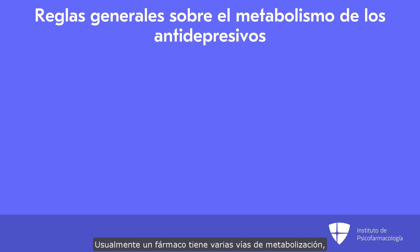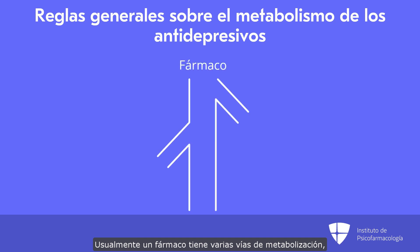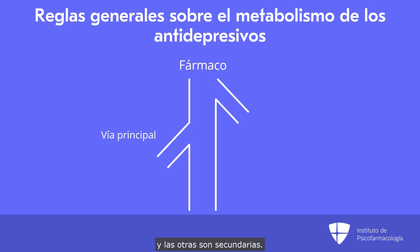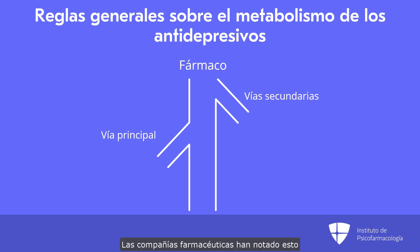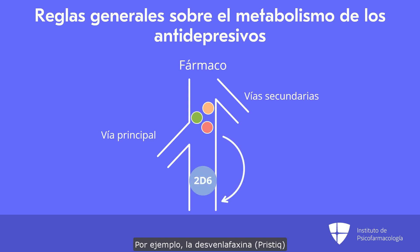There are some general rules or observations with antidepressant metabolism. Typically a medicine has several metabolism pathways — usually one is a major pathway and the others are minor pathways, and sometimes metabolites might undergo different pathways. Pharmaceutical companies have noticed this and produced medicines that can bypass 2D6, such as desvenlafaxine, which is Pristiq — that one really bypasses 2D6.